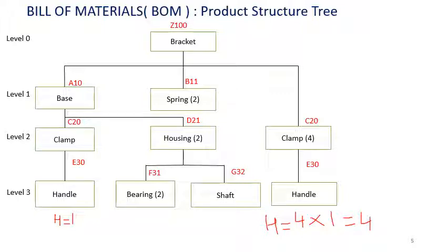For every one bracket, four clamps are required, so four handles from that path. Adding the one handle from the base-clamp path: total handles required = 1 + 4 = 5 handles per unit of bracket.